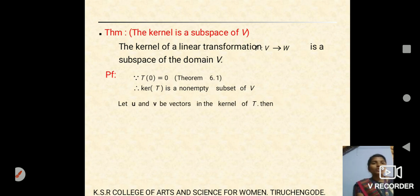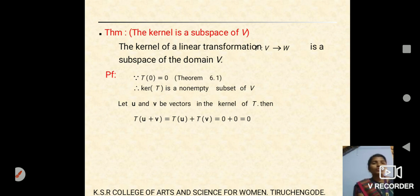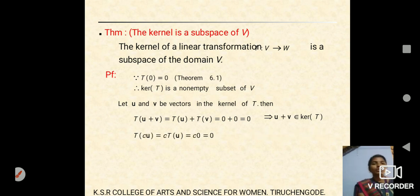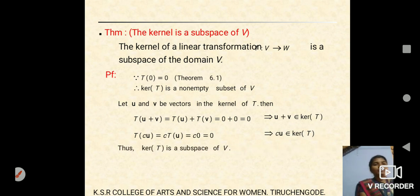Proof: we know T(0) = 0 is a property of linear transformation, so the kernel of T is a non-empty subset of V. Consider any two non-zero elements U, V belonging to the vectors in V. Adding U + V and applying mapping T: T(U + V) = T(U) + T(V) = 0 + 0 = 0, since T is the kernel. So U + V belongs to the kernel of T. For scalar multiplication: T(cU) = c·T(U) = c·0 = 0, so cU belongs to the kernel of T. Since both addition and scalar multiplication belong to the kernel of T, the kernel of T is a subspace of V.